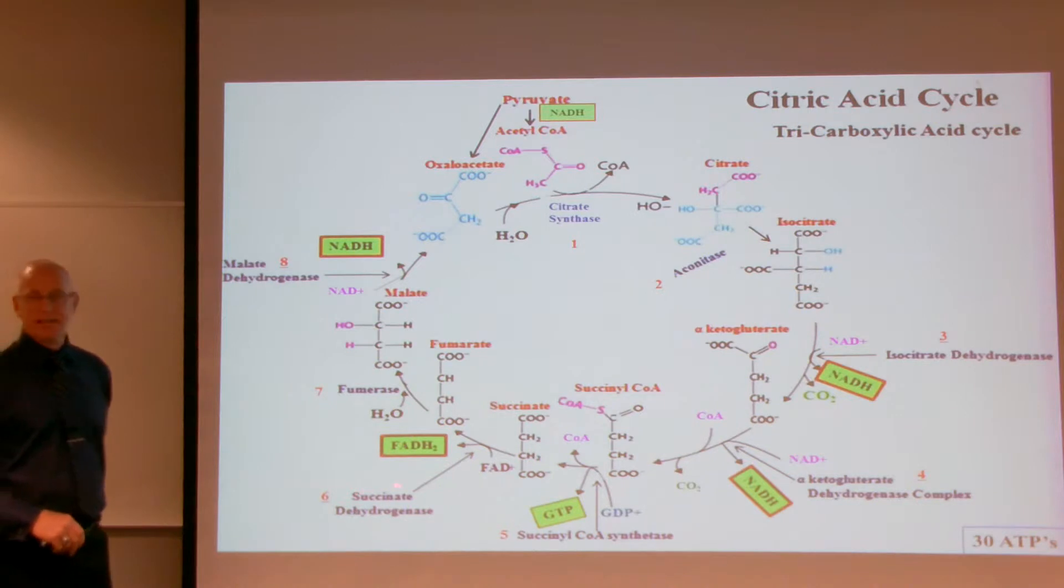Now the sixth step, succinate dehydrogenase, is another oxidation process where we will oxidize succinate to fumarate, and flavin adenine dinucleotide will do the oxidizing of that as it is reduced to FADH2. And there, we still have a four-carbon molecule coming into the four-carbon molecule fumarate.